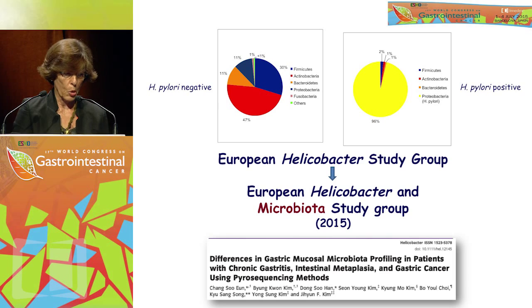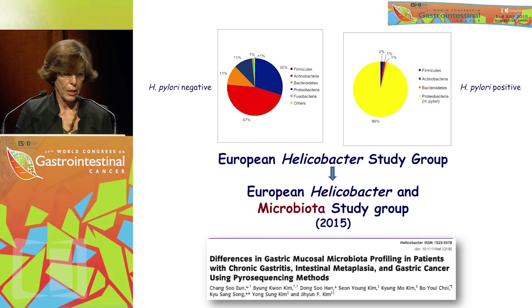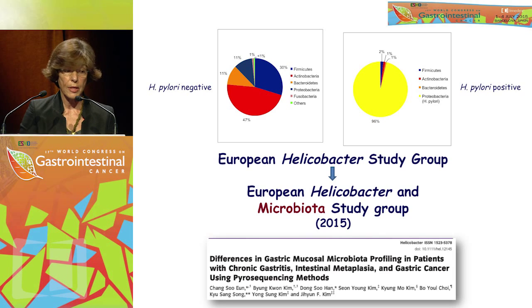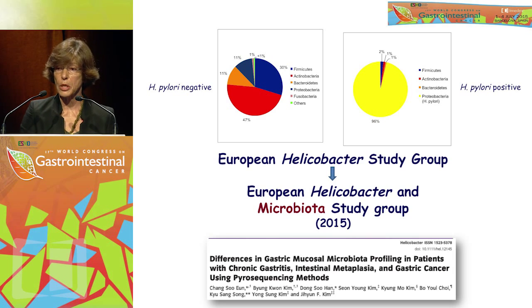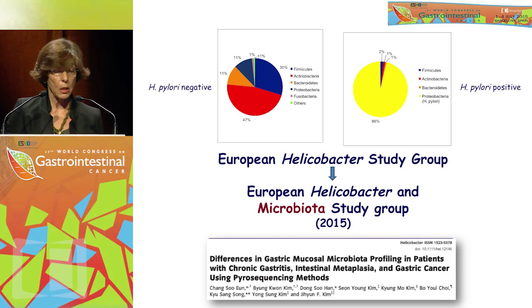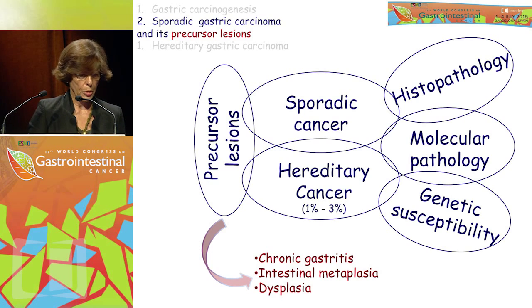The so-called European Helicobacter Study Group changed its name to the European Helicobacter and Microbiota Study Group in 2015, and there are already papers addressing the role of the microbiome in the development of precursor lesions and gastric cancer. Maybe in the future we have to learn a lot from this information.